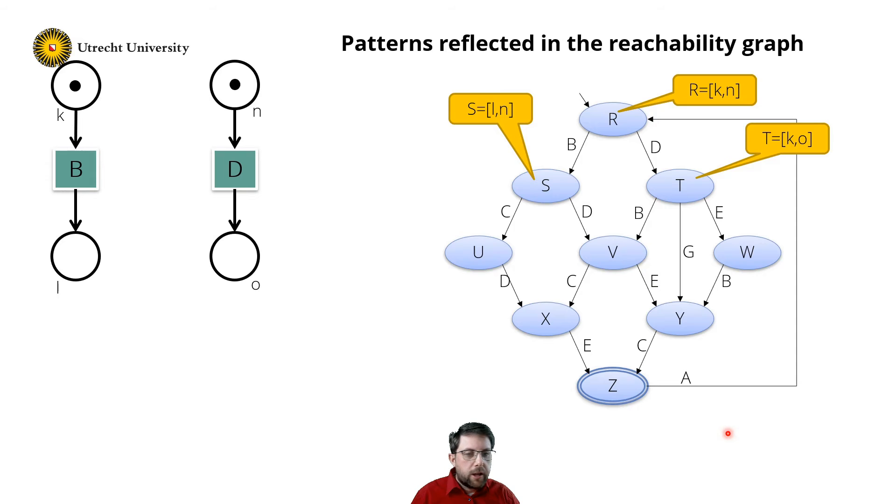Now let's have a closer look to state S over here. Again I observe a diamond here with C and D. So I also observe that transition C always occurs after transition B.